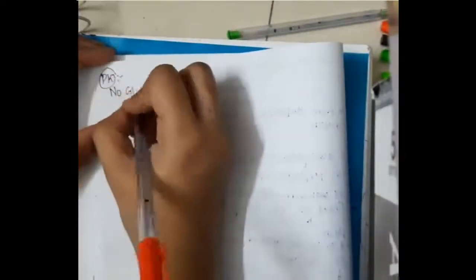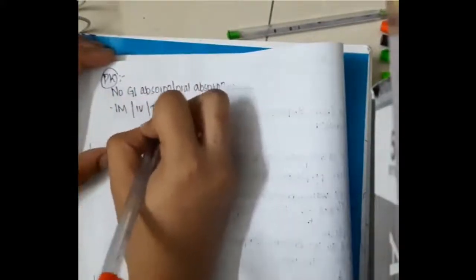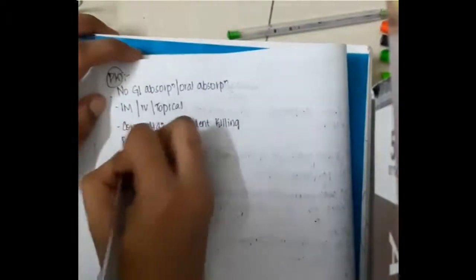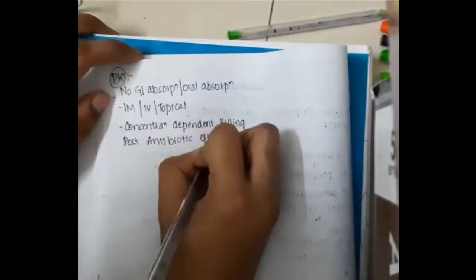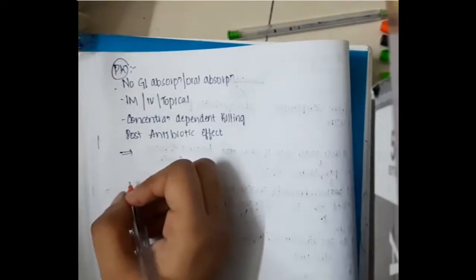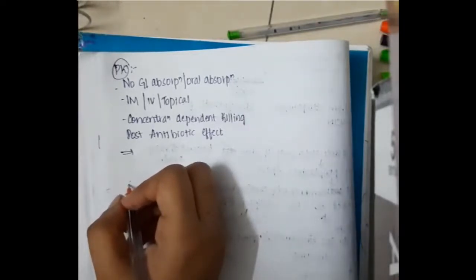In pharmacokinetics, there is no GI or oral absorption. Aminoglycosides can be given intramuscularly, intravenously, or by topical route. They have concentration-dependent killing and a post-antibiotic effect. They are present in low concentrations in synovial, pleural, and peritoneal fluid.